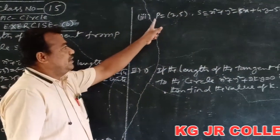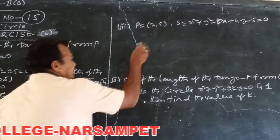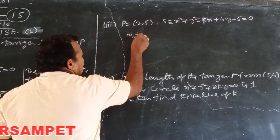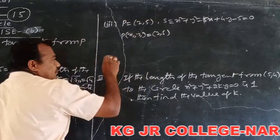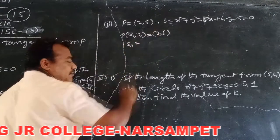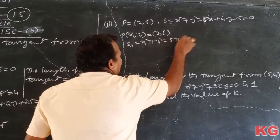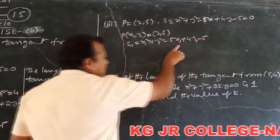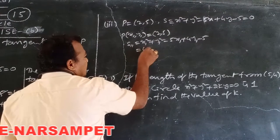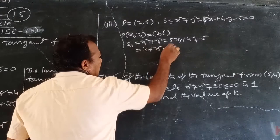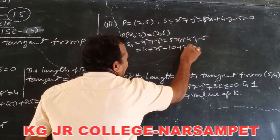This is another problem: to find out the length of the tangent drawn from the point (2, 5) to the circle. The given point we consider is (x₁, y₁) = (2, 5). Now take S₁₁. S₁₁ of the given circle: x₁² + y₁² - 5x₁ + 4y₁ - 5. Here x₁ = 2, y₁ = 5.